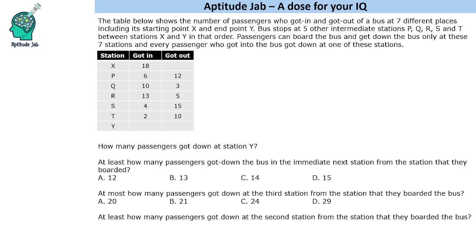The first question is very simple: how many passengers got down at station Y? Since every passenger who got in must have got down at one of these stations, the total who got in must equal the total who got out. We add 24, 34, 47, 53 on one side and 15, 20, 35, 45 on the other. The answer is 8.